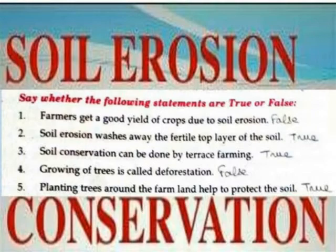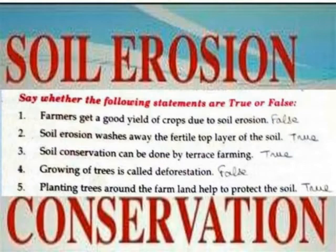Soil conservation can be done by terrace farming. True. Growing trees is called deforestation. False. Plants and trees on farmland help to protect the soil. True.